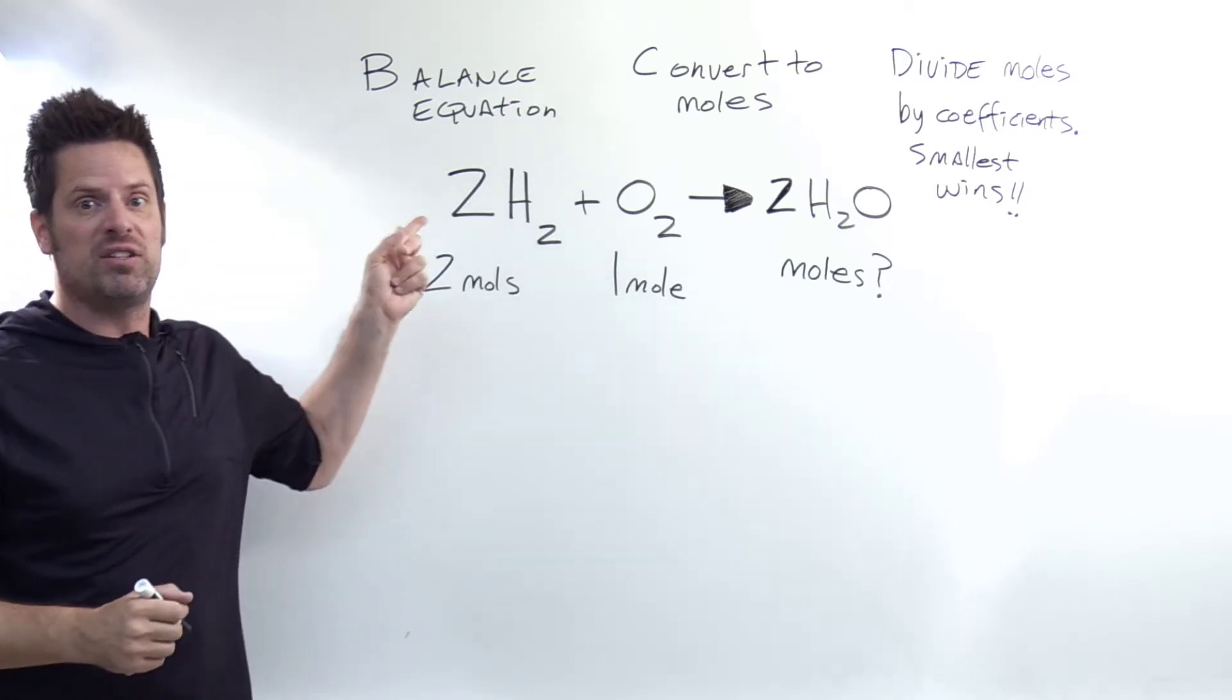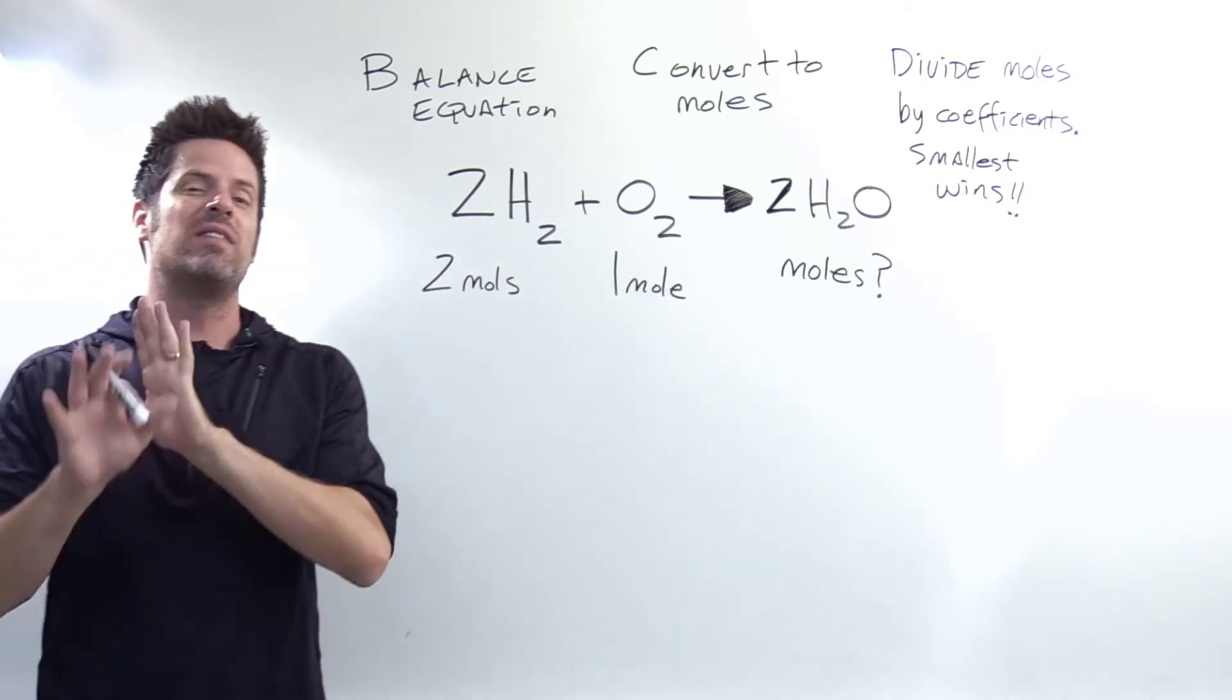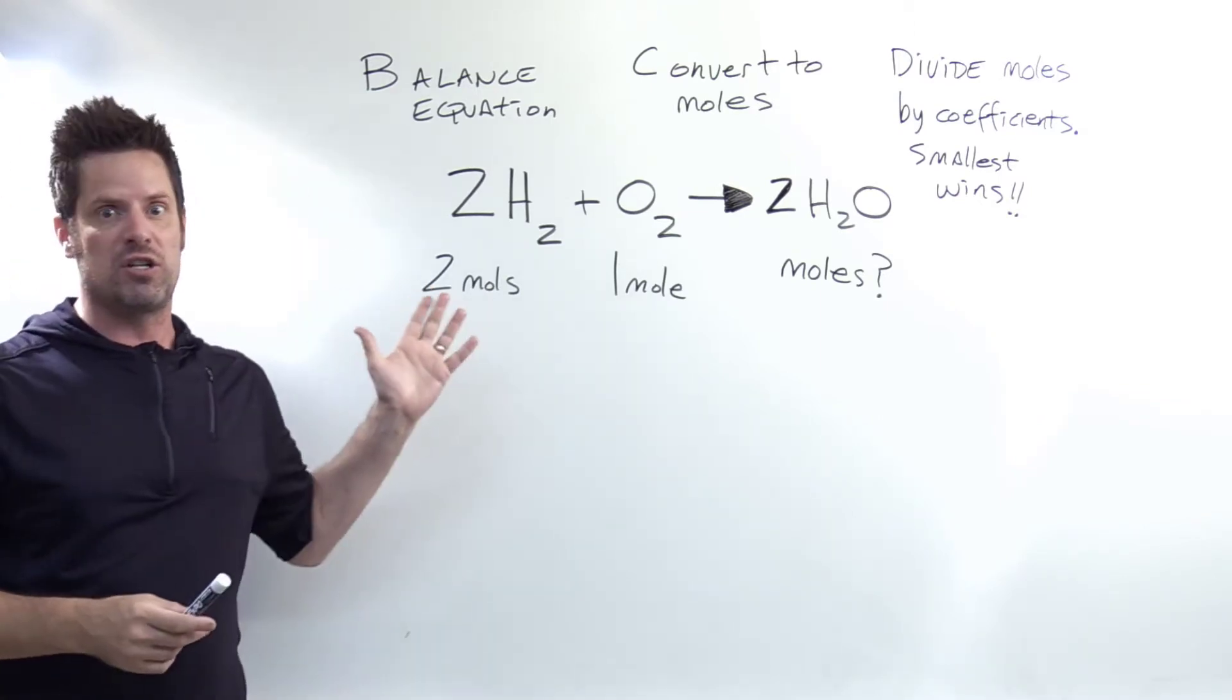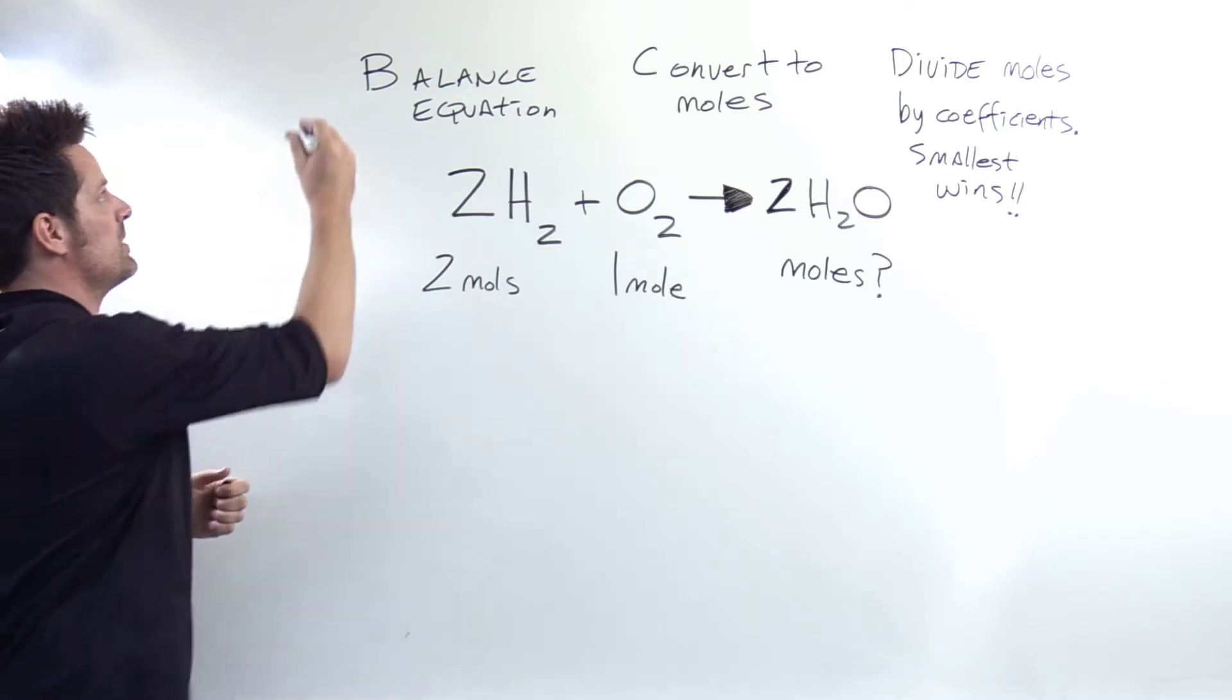Starting then with B, balance the chemical equation. Using principles that we've discussed in another video that I'll link to floating over my head or in the description, you might notice that this equation comes to us balanced. So we're done with step B.